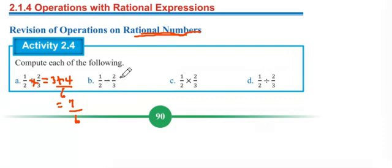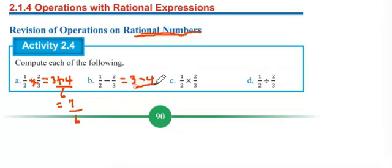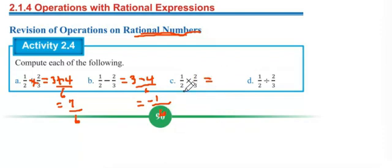One times three is three, minus two times two is four, over six, which equals three minus four, giving minus one over six. For multiplication: one times two is two, two times three is six.